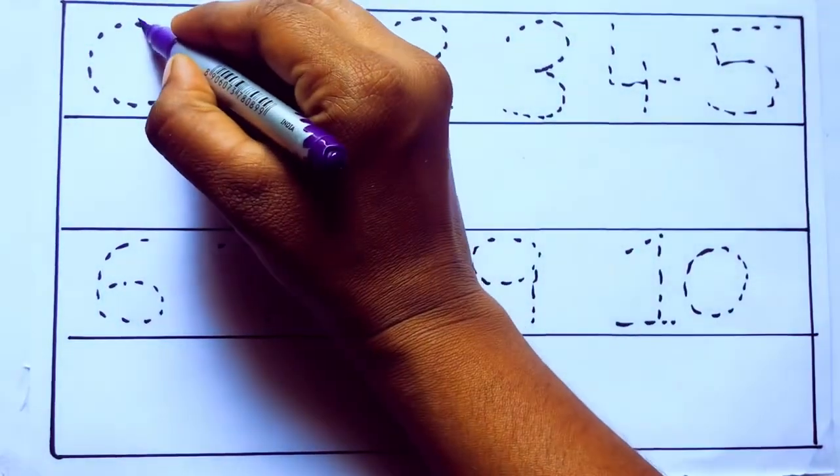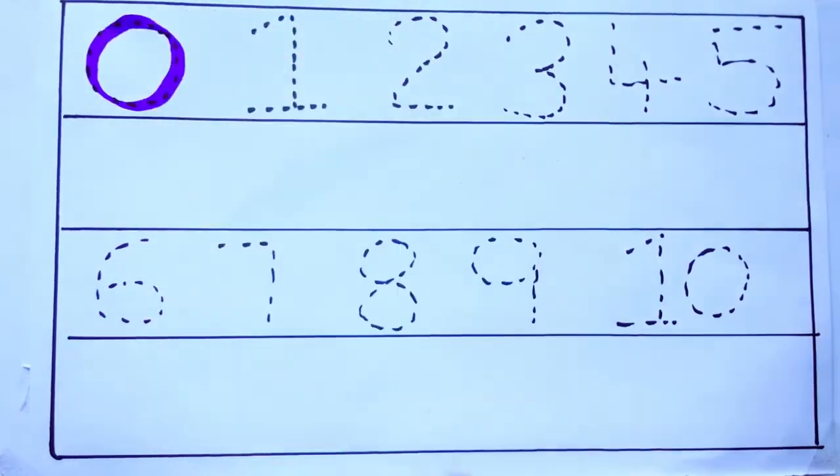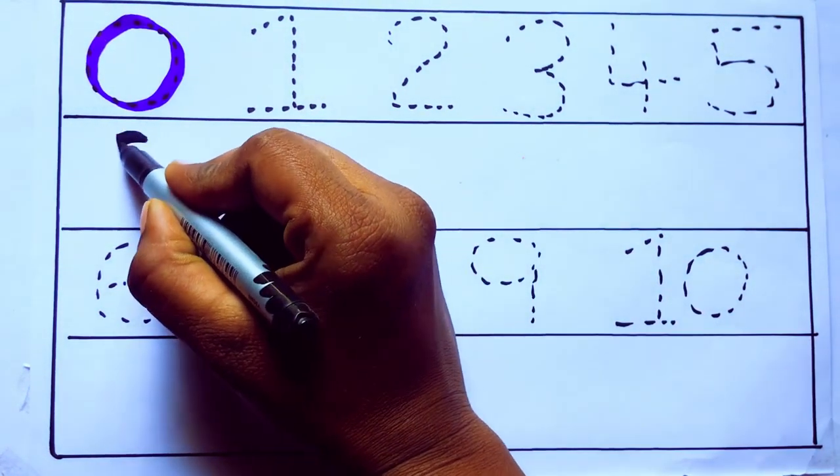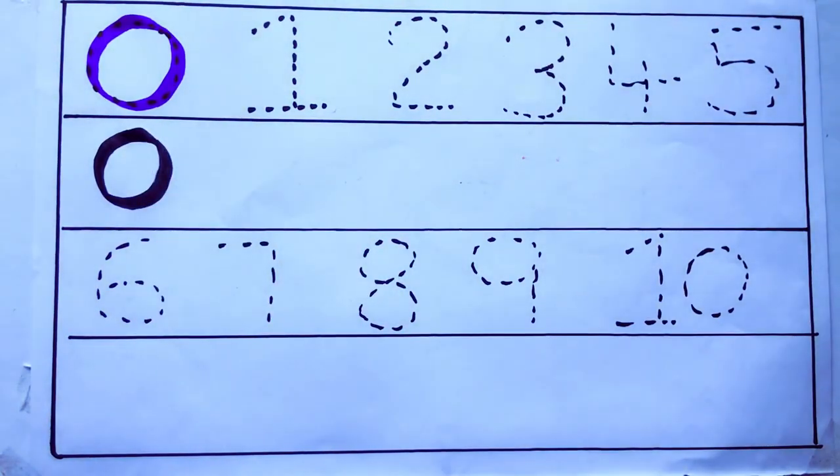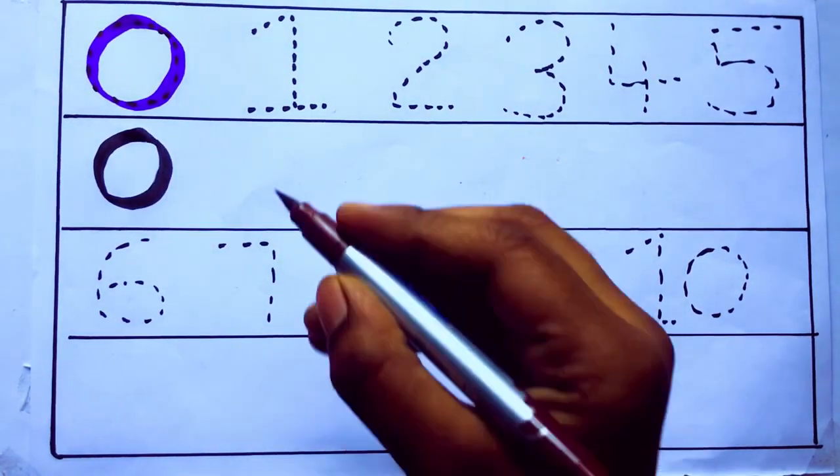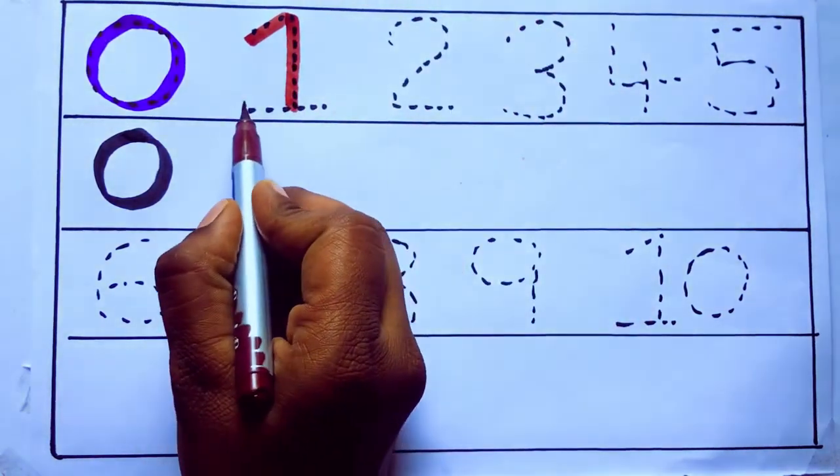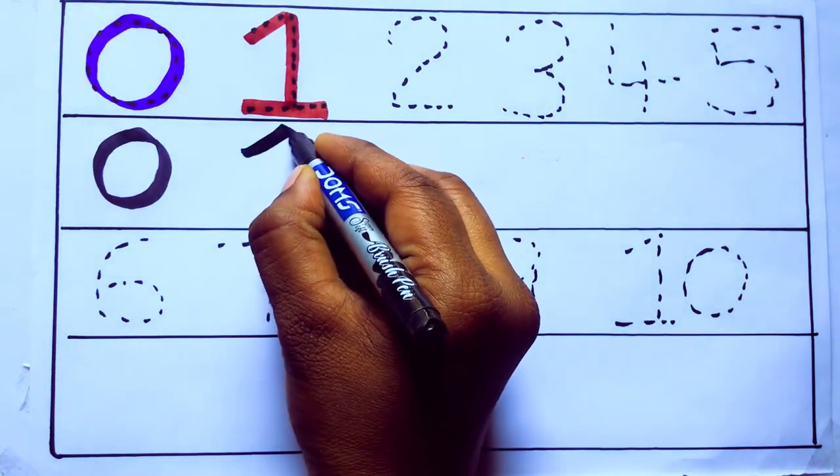Violet color 0, Z-E-R-O. Brown color 1, O-N-E, number 1.